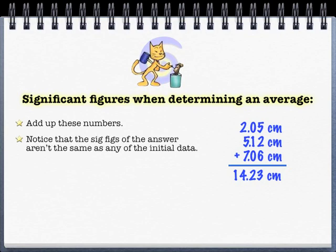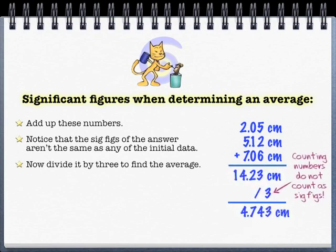We do run into a problem when we want to do an average, because if we divide this by three, and remember, three is a counting number so it doesn't limit.